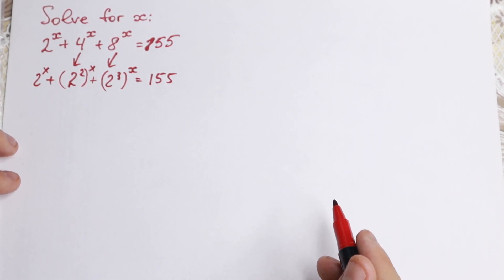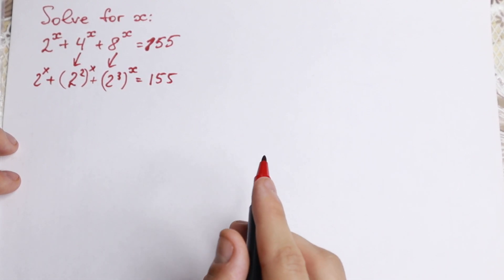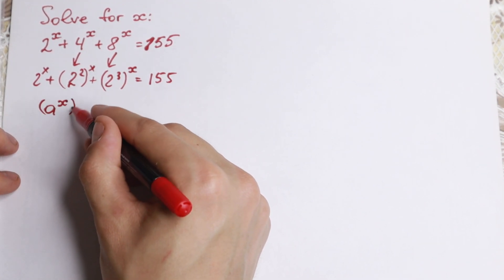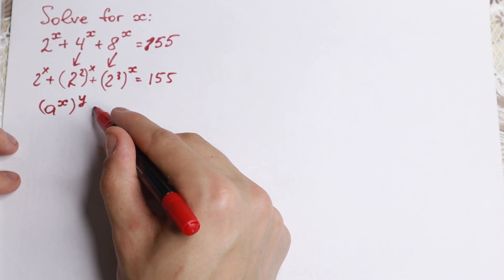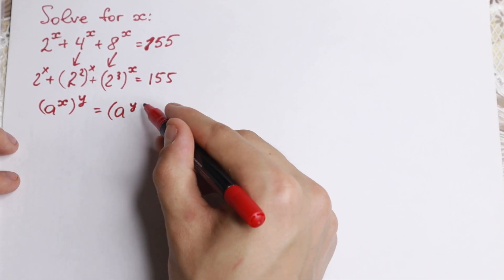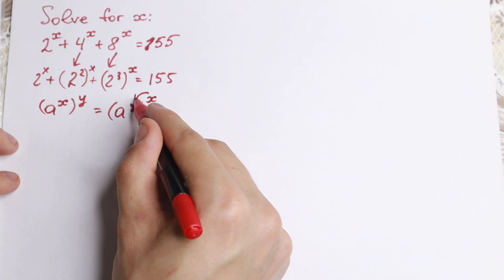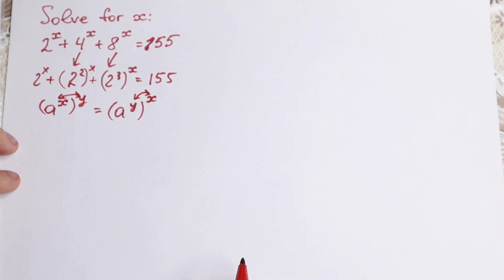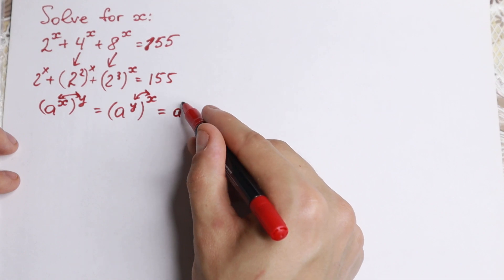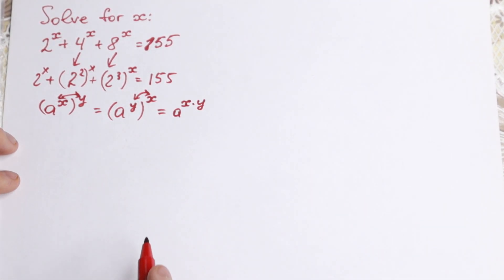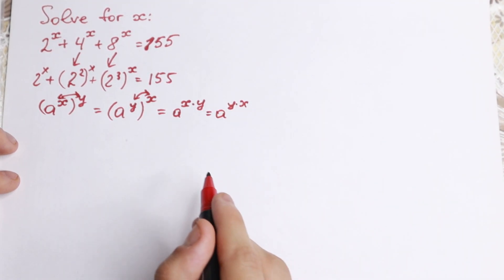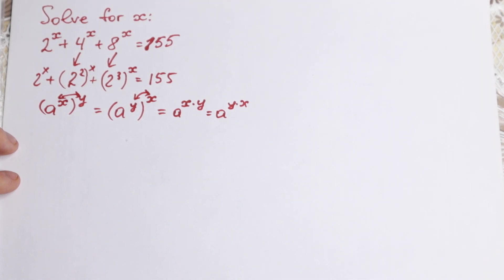Now I want to show you the rule of interchange — a really helpful rule here. If we have a to the power x, raised to the power y, we can easily rewrite it as a to the power y, raised to the power x. We can swap the exponents because both equal a to the power x times y — the product doesn't depend on order.